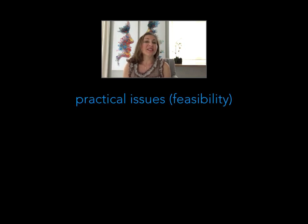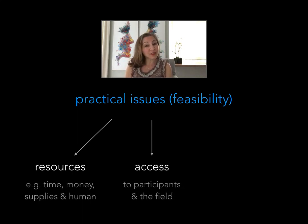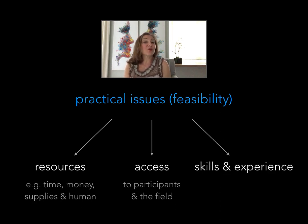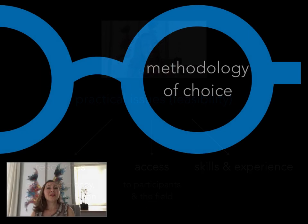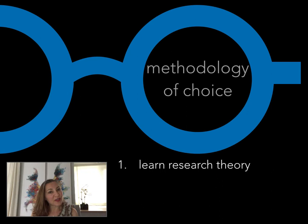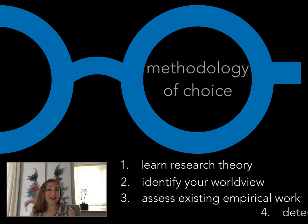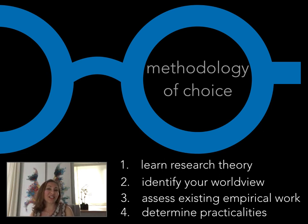Finally, methodological choice is guided and restricted by practical issues such as available resources — this can be time, money, supplies, and human resources — access to participants and the field, and the researcher's skills and previous research experiences. To summarize the methodology lens: learn about research theory, identify your own worldview regarding ontology, epistemology, and axiology, assess existing empirical work on your topic, and determine the practical aspects of conducting a study.